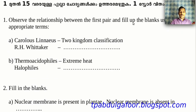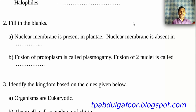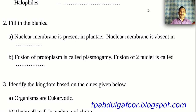The second question: Fill in the blanks. Nuclear membrane is present in plant A. Nuclear membrane is absent in dash. Answer: Prokaryotes. Fusion of two nuclei is called dash.